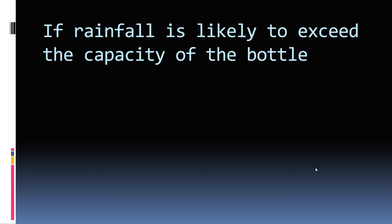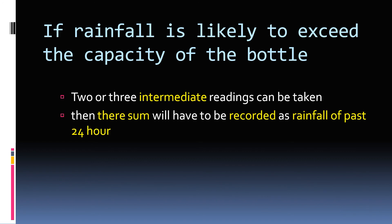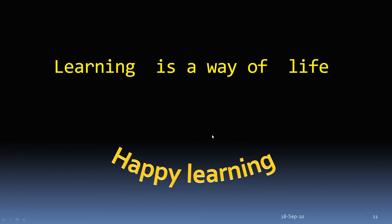If rainfall is likely to exceed the capacity of the bottle, two or three intermediate readings can be taken, and these must all be recorded as the rainfall of the past 24 hours.